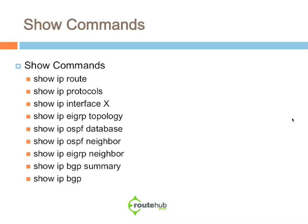Here is a summary of some key show commands. ShowIPRoute is used on a routing device to look at the global routing table. ShowIPProtocols gives you information about all configured routing protocols. ShowIPInterface, for example ShowIPInterface FastEthernet 0/0, shows IP information about how that interface is configured. For neighbor tables significant to EIGRP and OSPF, you would use ShowIPOSPF Neighbor or ShowIPEIGRP Neighbor to view adjacencies. For topology tables, use ShowIPEIGRP Topology or ShowIPOSPF Database.